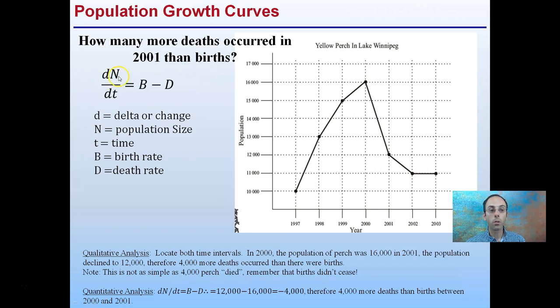This is the equation we're going to use. Delta N, or change in population size, over the change in time equals the birth rate minus the death rate. We're going to use this data right here.